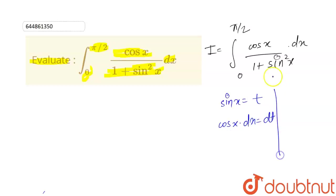So now let's check the limit. When x tends to 0, then t tends to 0 because sin 0 is 0. And when x tends to pi by 2, then t tends to 1 because sin pi by 2 is 1.